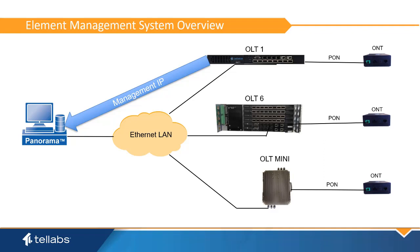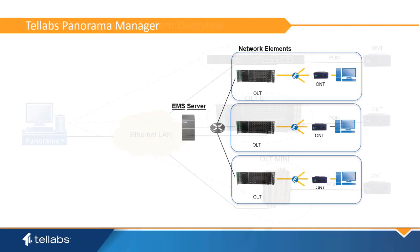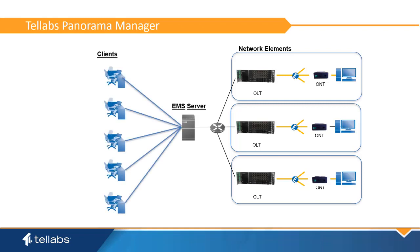Panorama uses encryption and certificate authentication to establish and maintain a secure connection between the EMS and the network element. Panorama uses a centrally managed LAN model where intelligence is focused centrally and flows to the endpoints. To communicate with the EMS server, Panorama is deployed in a client-server configuration, where client users can be given controlled access to the server depending upon their function in the organization.